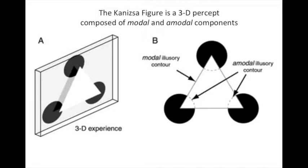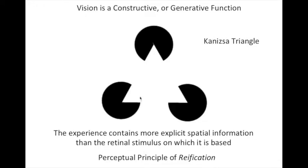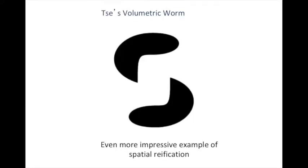The Kanizsa triangle is actually a three-dimensional percept composed of both modal and amodal components. The modal component is seen as an actual brightness edge, whereas the amodal edges are those that appear to be hidden behind the occlusion. We can still see these as complete circles, and we can trace out where we perceive them to be, hidden behind the triangle. Here we have Peter Tse's volumetric worm—an even more impressive example of spatial reification. We see an actual curved surface on this illusory surface, with surface normals each pointing in their own specific direction. We see a regular spiral shape and a circular cross-section throughout the worm, including the amodal experience of the completion behind the pillar.